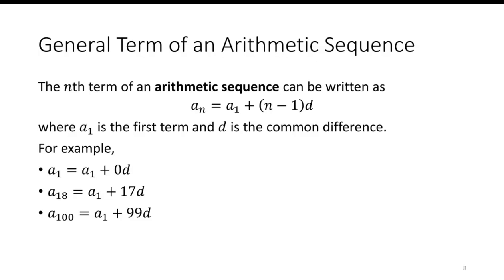For example, a sub 1 could be like a 1 plus 0 times d, a sub 18 would be a 1 plus 17 times d, a sub 100 is a 1 plus 99 times d, for whatever the d is and for whatever your a 1 is.